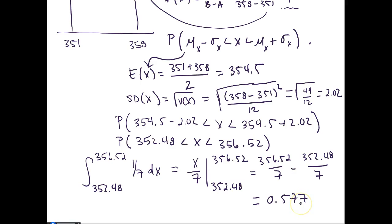This equals 356.52/7 minus 352.48/7, which is altogether equal to 0.577. So the likelihood that the value will be within one standard deviation from the mean is 57.7%.